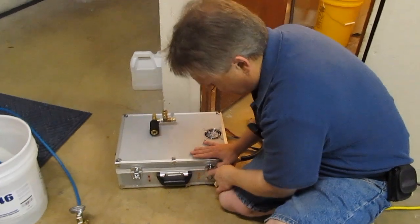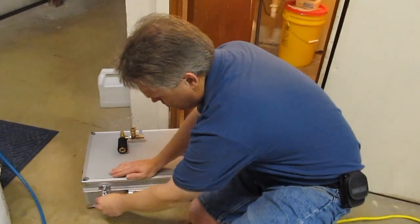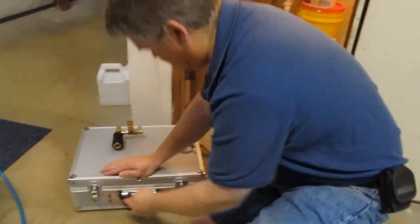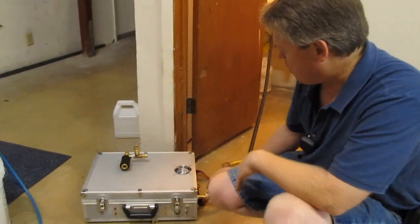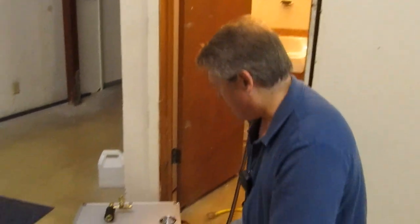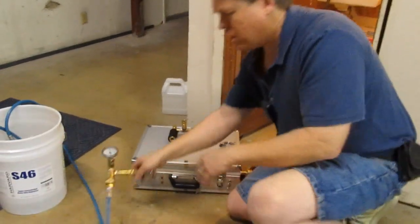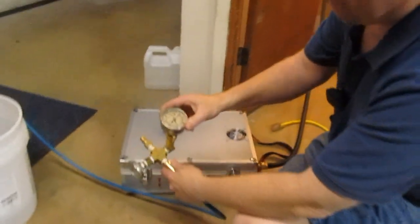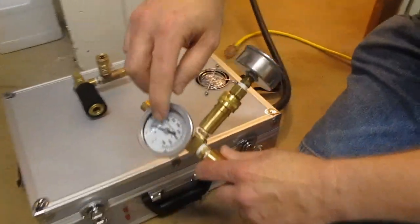By the way, these clasps on this unit do come with keys if you ever want to lock it. But in the meantime, we went ahead and just hooked it to the sink and I'm going to go ahead and hook up some testing equipment. On this, we've got a pressure gauge and a temperature gauge.